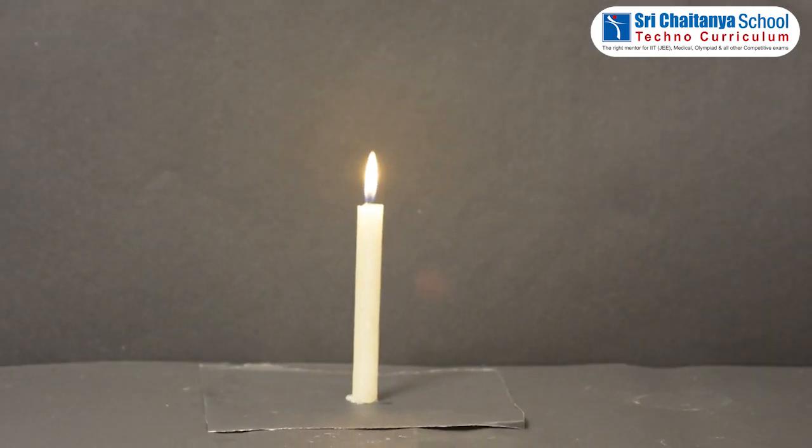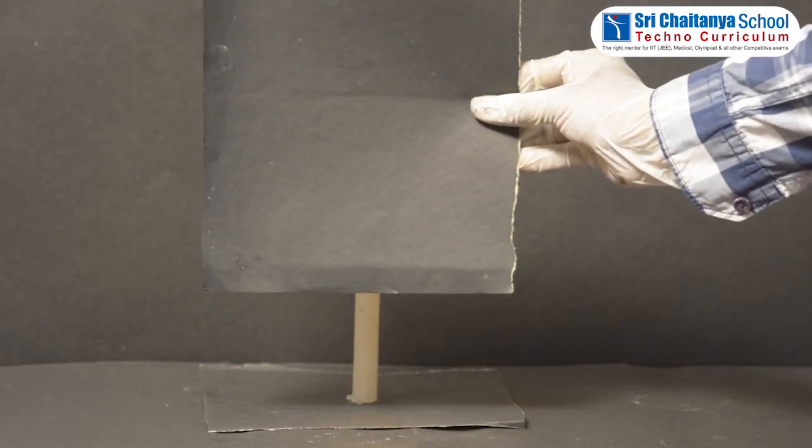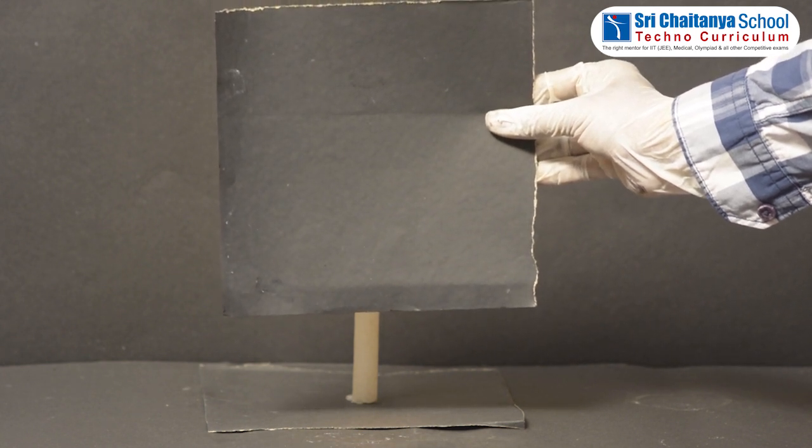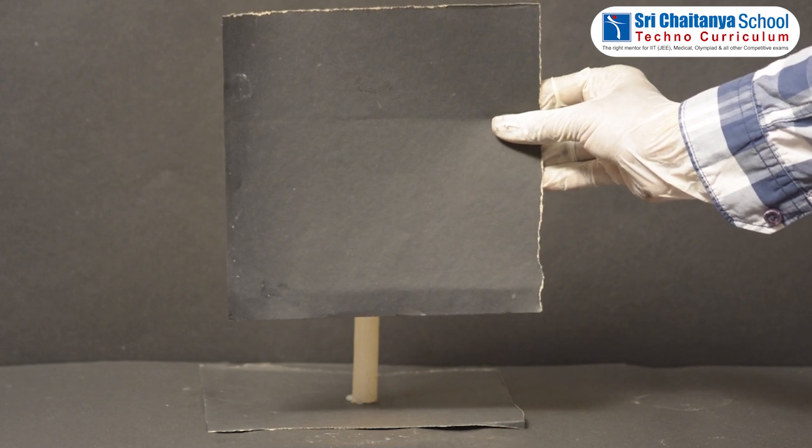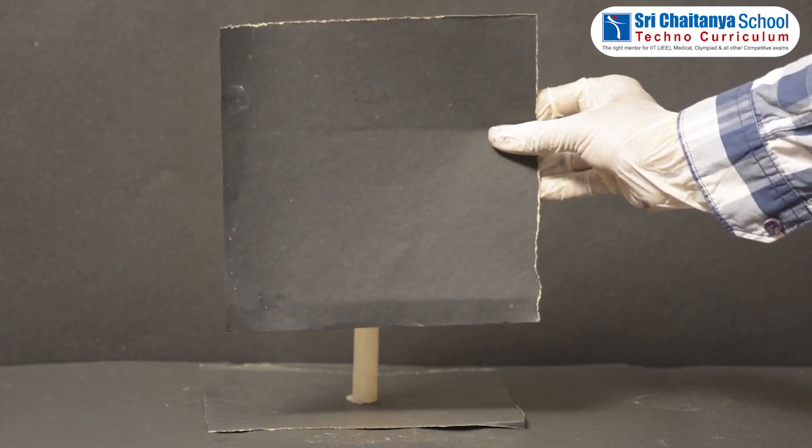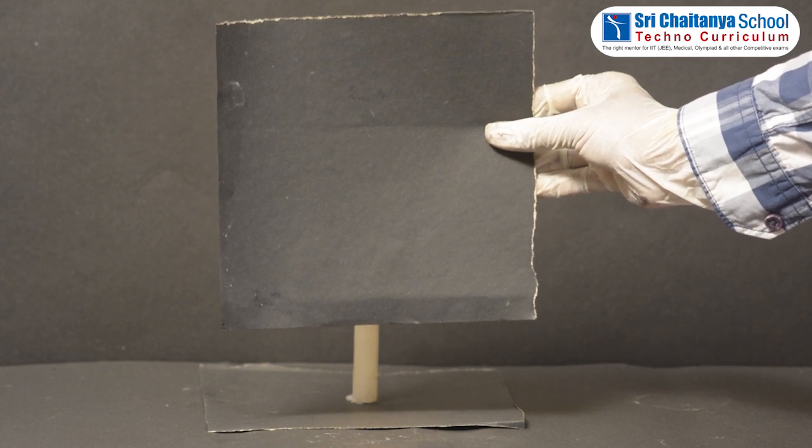Then, use cardboard sheet and observe. So, can you see the lighted candle now? No, because the cardboard sheet is opaque in nature, we cannot observe the lighted candle.